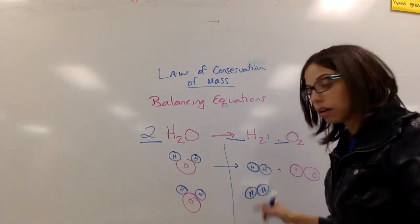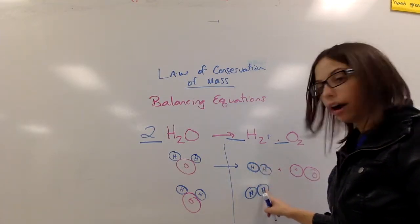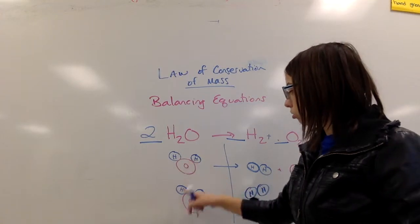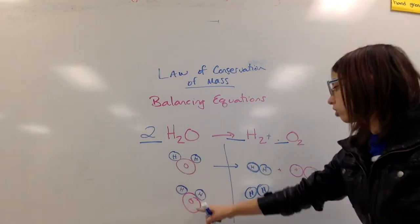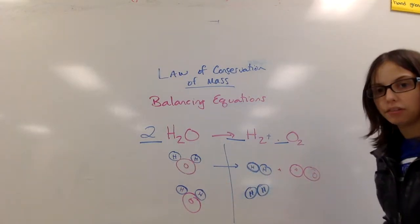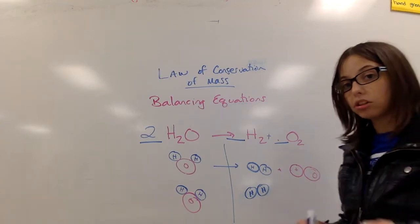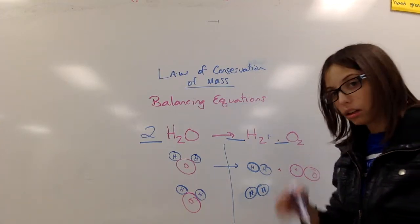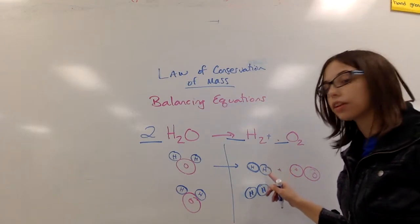And now I go back and I count my atoms. I have one, two, three, four hydrogens after. One, two, three, four hydrogens there. Two oxygens before and two oxygens after. So this is balanced. And to make sure you are able to communicate this, that it is balanced, you write the coefficients for everything.